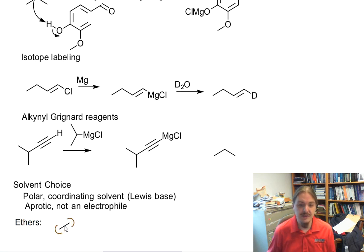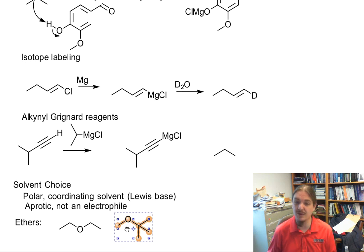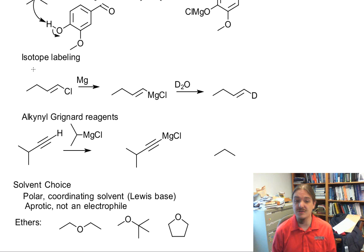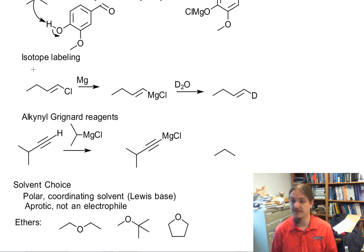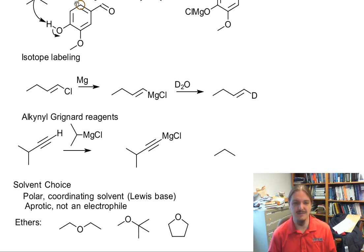Really, the only functional group that meets the requirements here are ethers. Common ether solvents for Grignard reagents include diethyl ether, methyl tert-butyl ether (which is a less hazardous variation — higher boiling point, less flammable, less likely to form explosive peroxides), or tetrahydrofuran, which is a cyclic ether. All of these molecules have lone pairs on the oxygen to coordinate the Grignard reagent, and they're aprotic and moderately polar. In the next video, we'll talk about the scope of the nucleophilic addition reactions, and in the final video we'll discuss using the Grignard reagent to synthesize molecules with new carbon-carbon bonds.